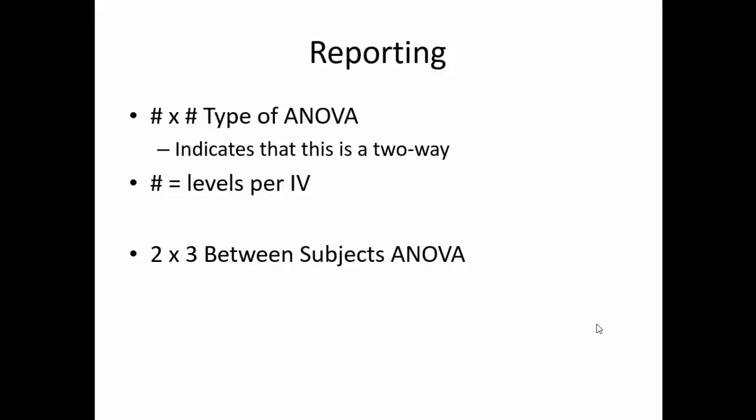When discussing the two-way ANOVA, we report it as a number-by-number between-subjects ANOVA, where the numbers represent the number of levels in each independent variable. In the example today, we will discuss a two-by-three between-subjects ANOVA.